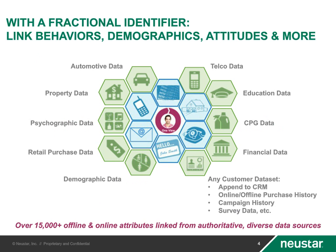Once we've got that authoritative identity — a cookie, an email, a mobile phone, a landline, an address — those can be tied to that persistent identity. That persistent identity is then linked to an Element One code, which is then linked to over 15,000 attitudinal, demographic, and behavioral propensities. Some of the categories include automotive and property data, retail purchase data, demographics, CPG data, and telecommunications data.